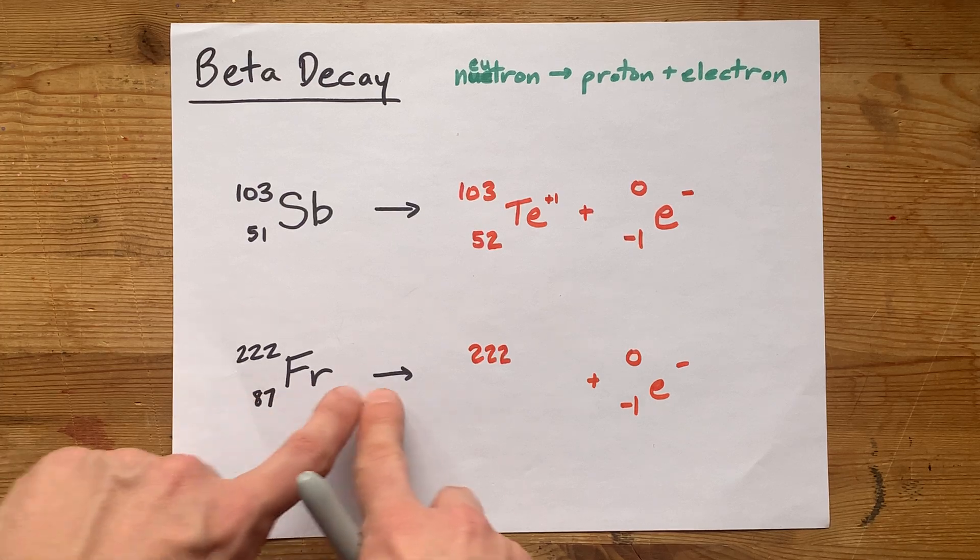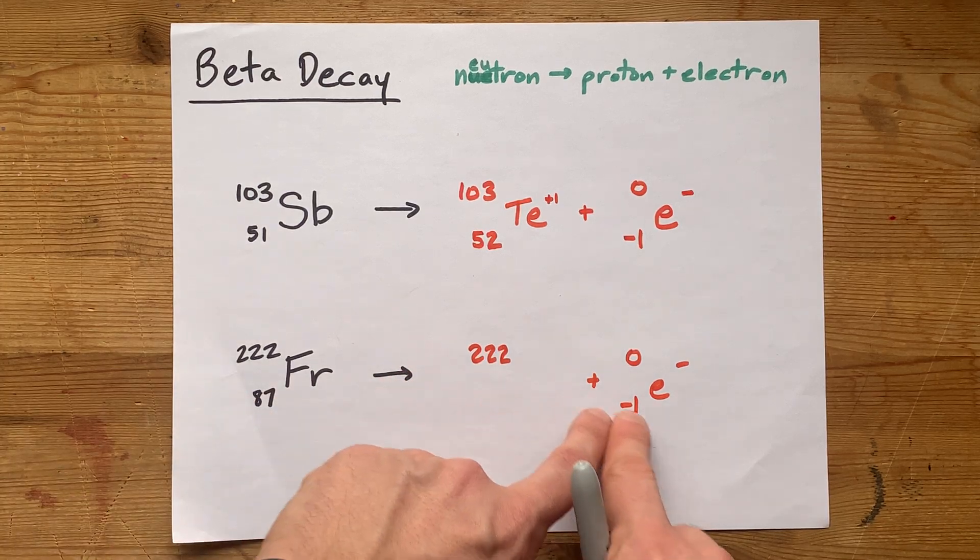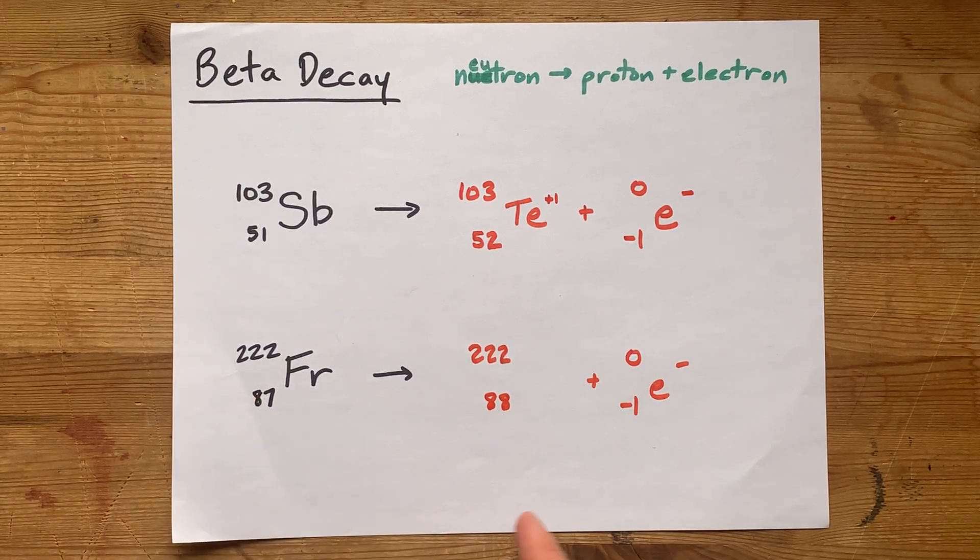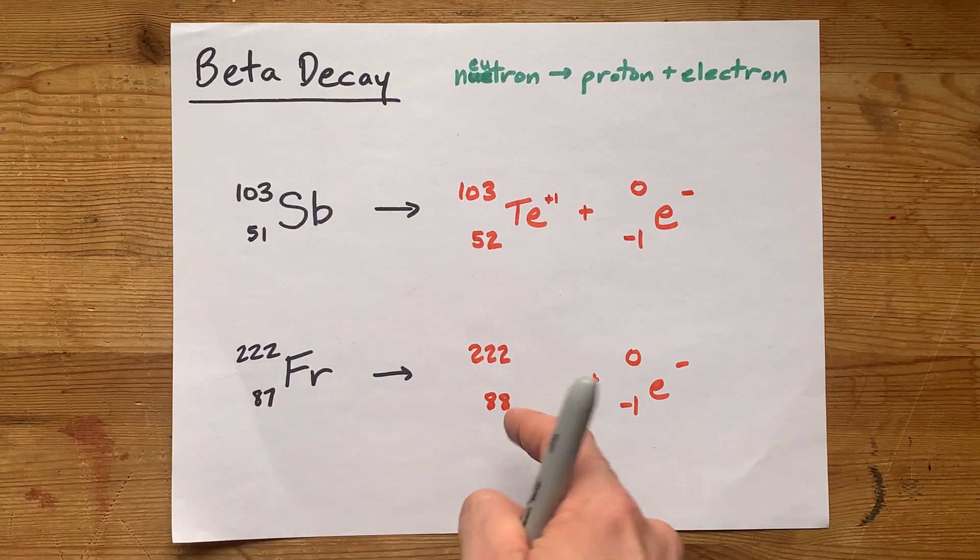And 87 is the sum of negative one and something else. It's 88 plus negative one to give 87, but that's because one of the neutrons broke apart to give us an extra proton.